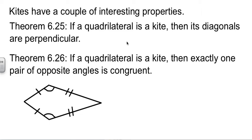If you have a kite, then the diagonals are perpendicular. So if we drew in this diagonal here, and we drew in this long horizontal one here, those would be perpendicular to each other. Sounds like right triangles to me.